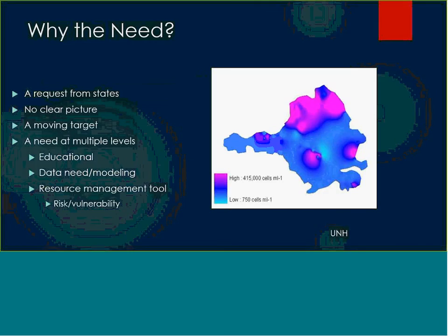Looking at how we came about getting to this point, around 2012-2013 we started to get requests in from states about how to address the HAB issue. It was starting to rise to the public's attention, and so we were getting requests in the region from the states — states were getting inquiries from the general public about blooms happening in their vicinities.